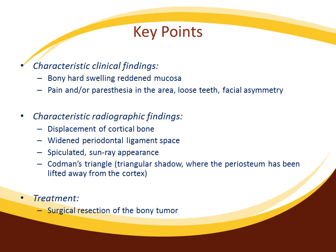Depending on the size and location of the tumor, there may be displacement of adjacent cortical bone, widening of the periodontal ligament, as well as enlargement or displacement of the inferior alveolar nerve canal if the lesion resides in the mandible. The best treatment option includes complete surgical resection of the bony tumor, with resection margins extending beyond the clinical and radiographic edges of the lesion. This provides the most reliable outcome with complete tumor removal while limiting side effects compared to adjunctive radiation and chemotherapeutic modalities.